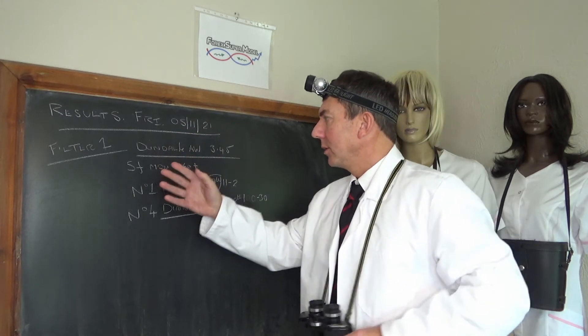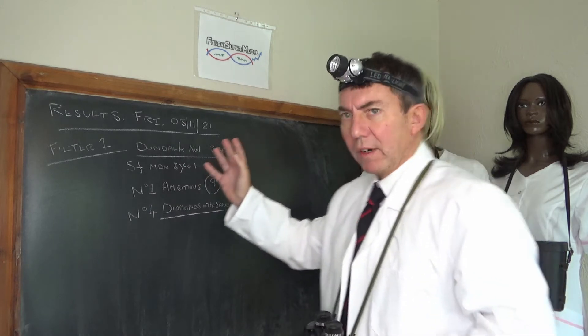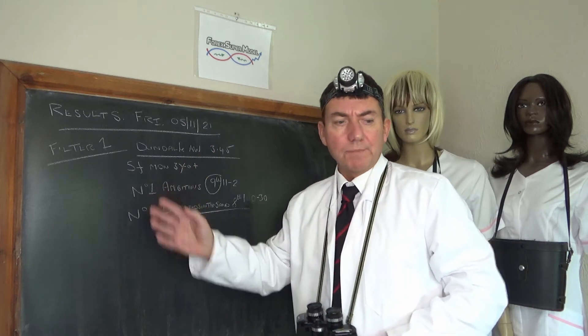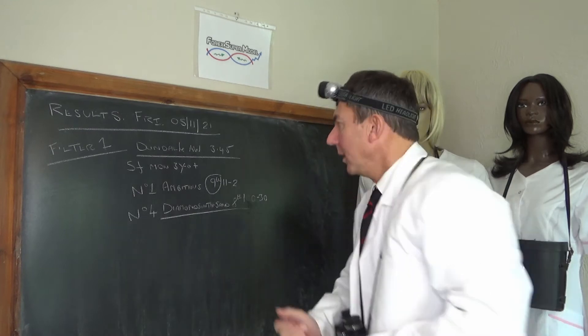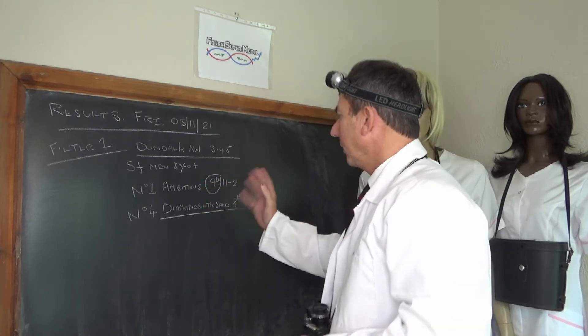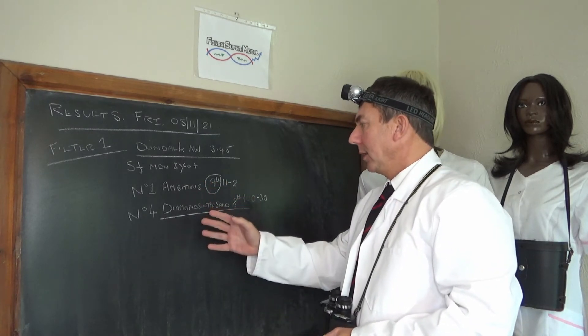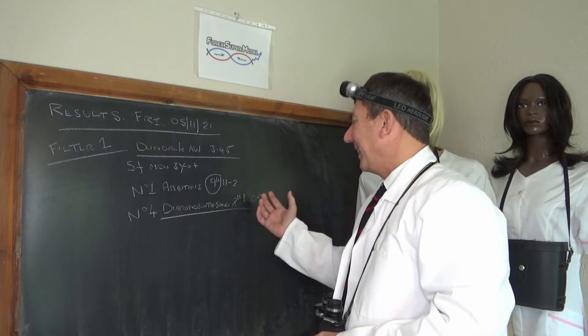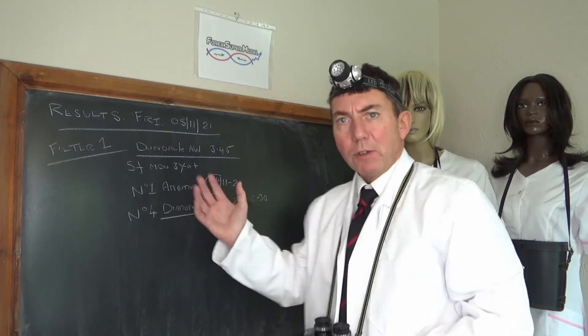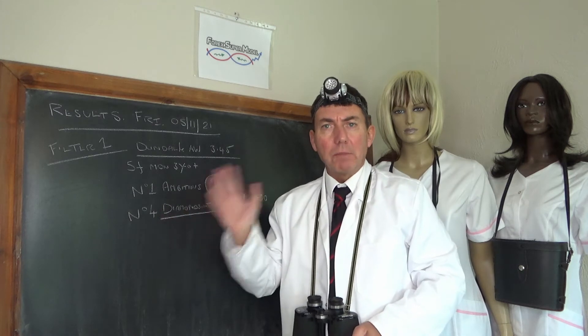We had a filter one race at Dundalk on the all-weather 345. We had a go at two horses: ambitious, which came ninth at 11 to 2, and number four diamonds in the sand, which came eighth at 100 to 30. So they're both pretty well stuffed.